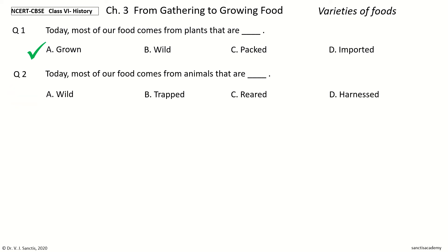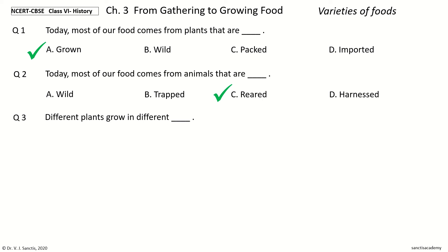Question 3: Different plants grow in different dash. The options are: fields, conditions, grasslands, sunlight. Your time to choose.